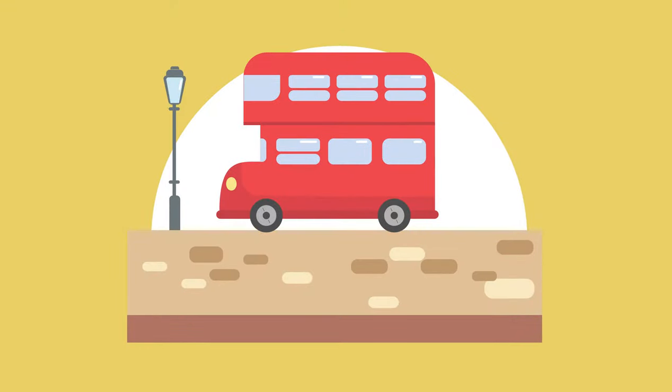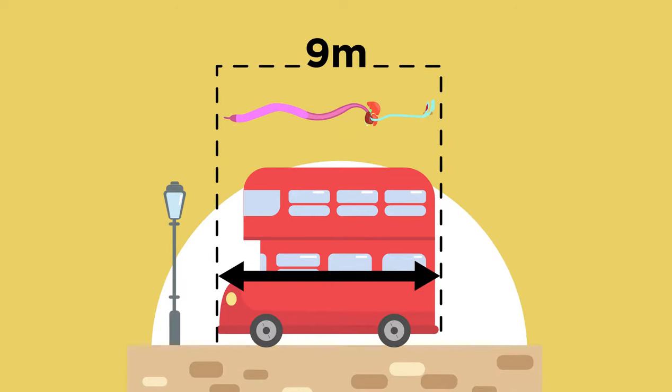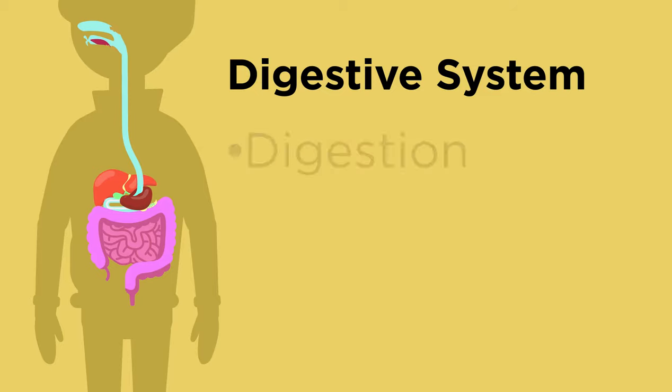Can you believe your digestive system is as long as a bus? Yep, it's about nine meters long, all wrapped up inside your body. A lot of things go on in your digestive system, not just digestion. What else do you think happens?